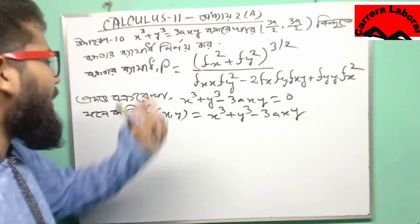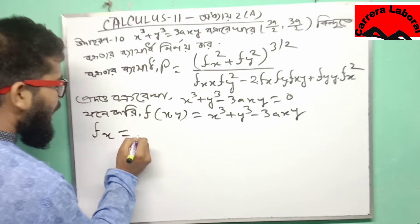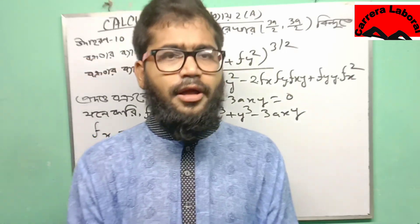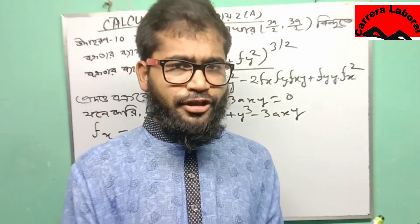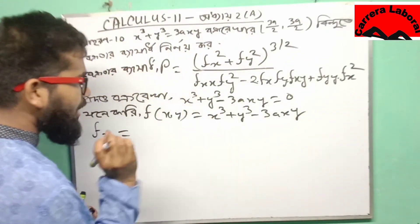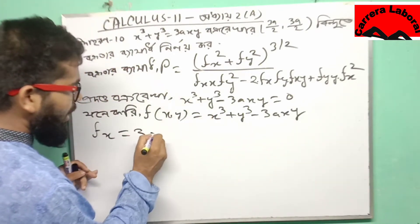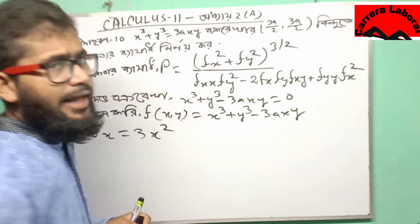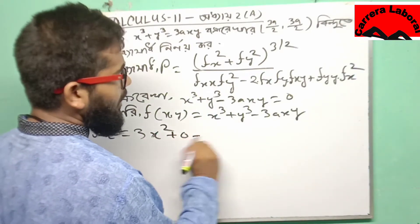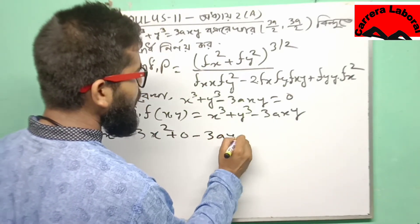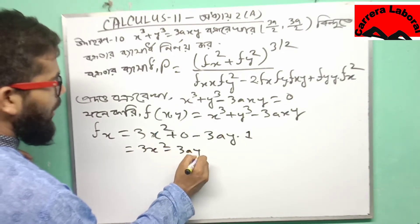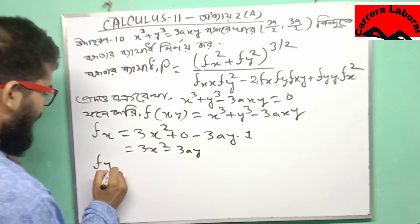We will be able to find x. x squared plus y. In our case, x is equal to x. 0 minus 4. Remember, xx is equal to y: 3x squared plus y.